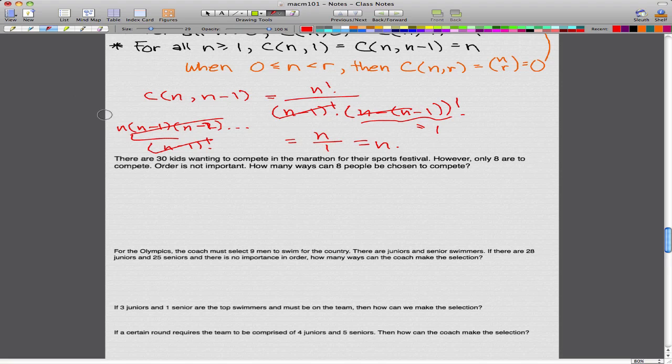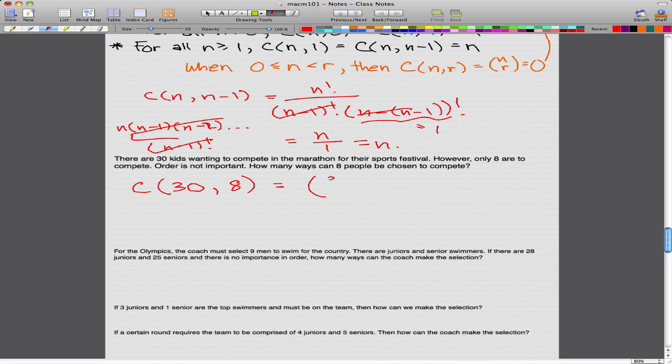This represents the combination formula that we're talking about. All we simply have to do is C(30,8) for 30 kids, which is N distinct objects, and R is 8. That's the answer. It's as simple as that. It's 30 choose 8. And then you just plug it into the formula and it's equal to 30 factorial over 8 factorial times (30-8) factorial.